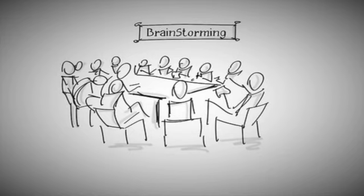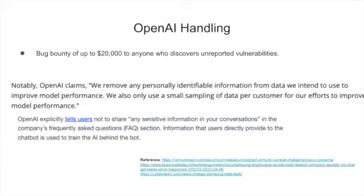Now let us brainstorm what can be done - you are all welcome to provide comments. One thing that OpenAI is doing is a bug bounty program. If any vulnerability is found, they give a reward. This is a step forward because bugs can be found earlier, before a hacker can exploit and cause damage.